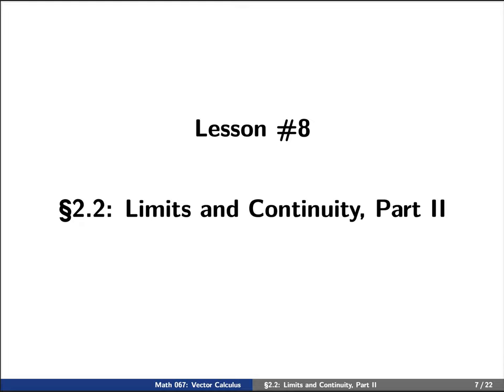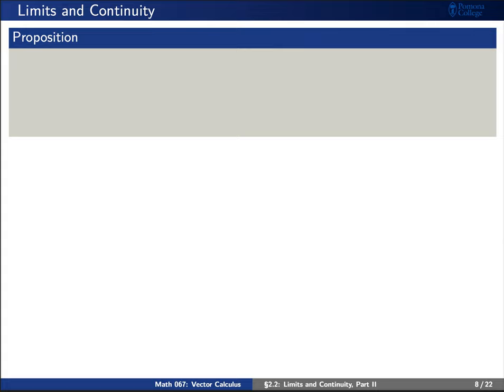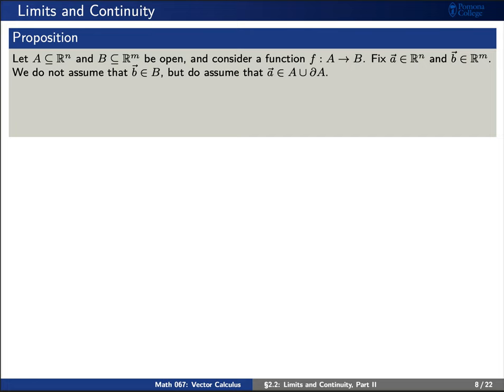Now let's move on to some new material. I'd like to begin with a proposition. Say that we have two open subsets — capital A inside of R^n and capital B sitting inside of R^m — and a function f going from A to B. Let's fix a vector a sitting inside of either our domain A or its boundary ∂A, and also fix a vector b which may sit inside of R^m. Then the following two statements are equivalent.